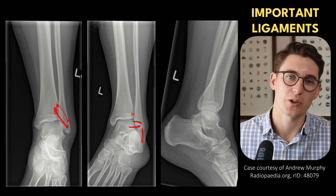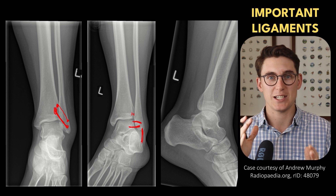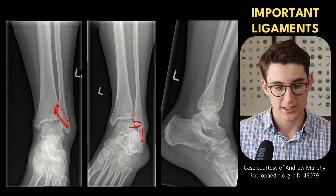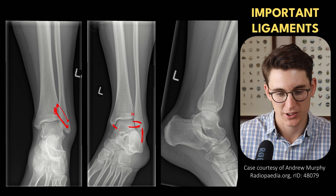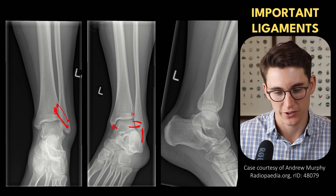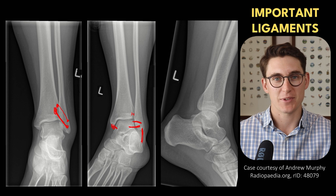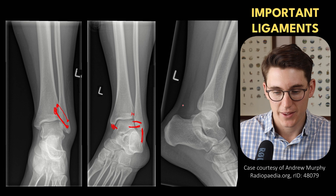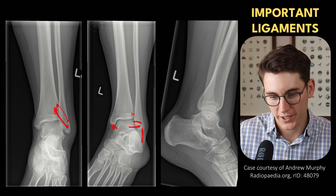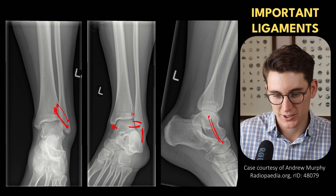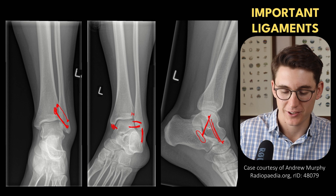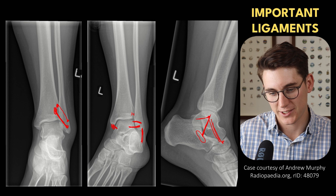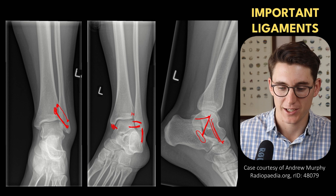Medially, we have what's called our deltoid ligament. The deltoid ligament can be separated into a deep band and a superficial band. The deep band runs from our medial malleolus towards the talus — we have both an anterior tibiotalar ligament and a posterior tibiotalar ligament making up this deep band. Then we have a superficial band: one heading from our tibia to our navicular — the tibionavicular ligament — and one heading from our tibia to the calcaneus, specifically to the sustentaculum tali — our tibiocalcaneal ligament — plus bands from the tibia to the talus congruent with that posterior tibiotalar ligament.